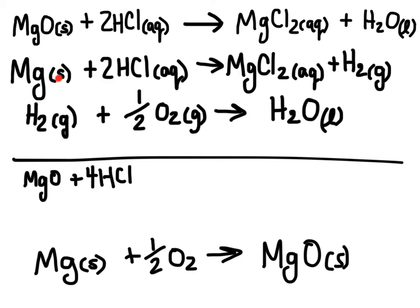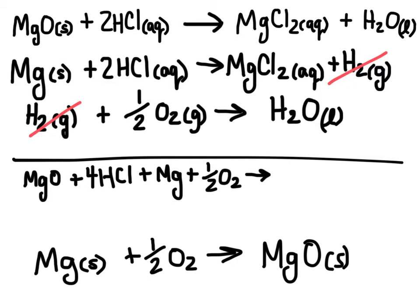Magnesium doesn't appear anywhere else, so I bring it down. Hydrogen gas appears in two reactions on opposite sides, so those cancel each other. Oxygen gas doesn't appear elsewhere, so I bring that down. On the other side, magnesium chloride appears in two reactions and adds to give two magnesium chlorides, and water appears twice and adds to give two waters.